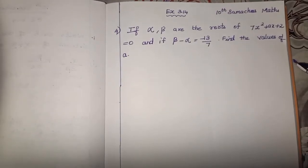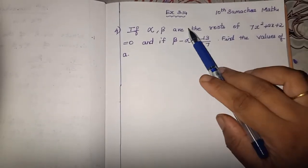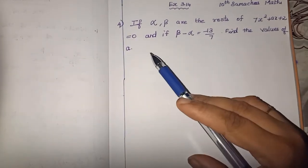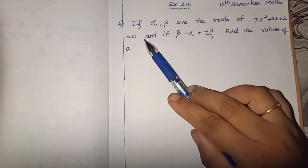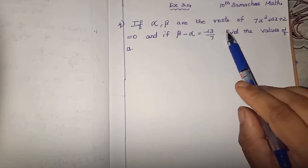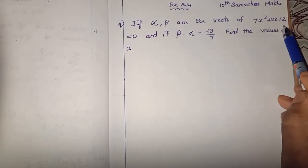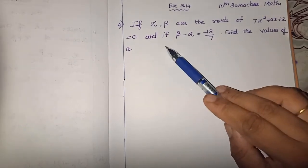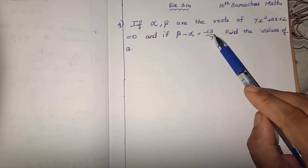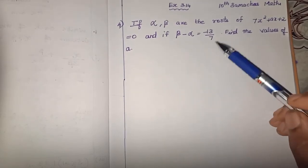Welcome to Lawmax channel students. The problem is: if alpha and beta are the roots of 7x squared plus ax plus 2 is equal to 0, and if beta minus alpha is equal to minus 13 by 7, find the values of A.